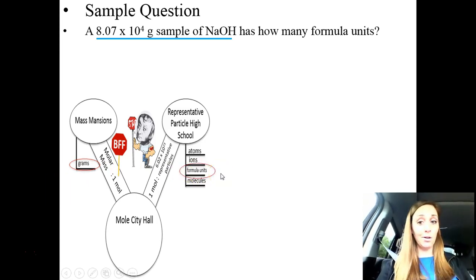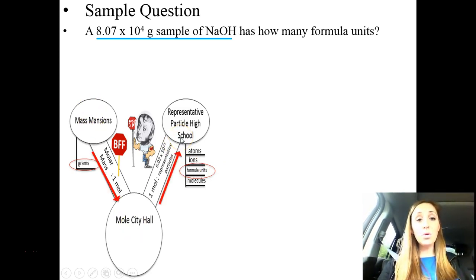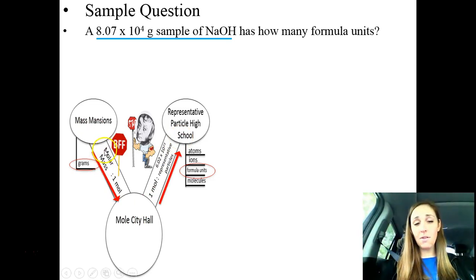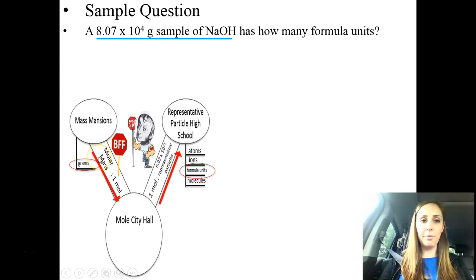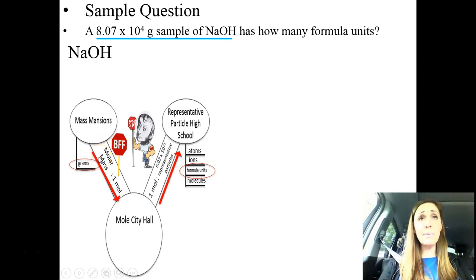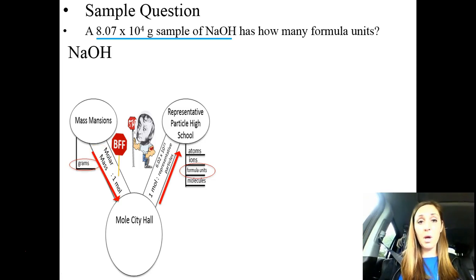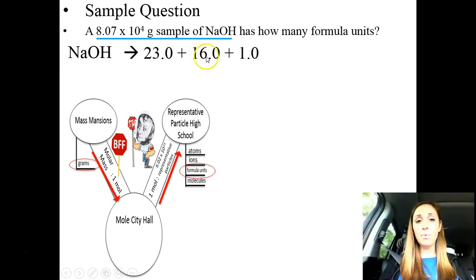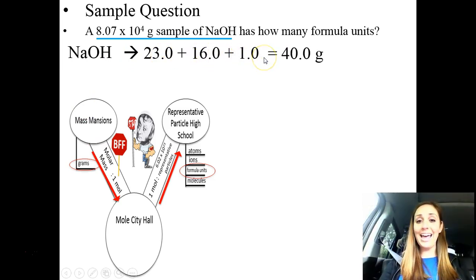Well, it's right here in mass mansions. And we want to convert it to formula units. So you have to find formula units on your map. So formula units is right here. It's at the representative particle high school. And if you look to get from the mansions to the high school, you have to take these two roads. On these roads, we're passing molar mass. So let's go ahead and solve for the molar mass so we don't have to break up our problem later. So sodium hydroxide has one sodium, one oxygen, and one hydrogen. So it's kind of an easy one. You've got 23.0 for sodium, 16.0 for oxygen, and 1.0 for hydrogen. Add those up and you get 40.0 grams.